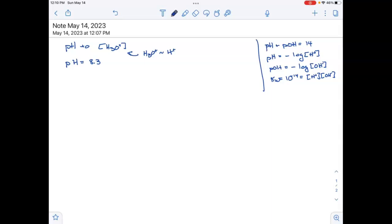To go from pH to hydronium concentration, what we do is we go 10 to the minus pH equals the concentration. So for this, it would be 10 to the minus 8.3. And if I put that in my calculator,